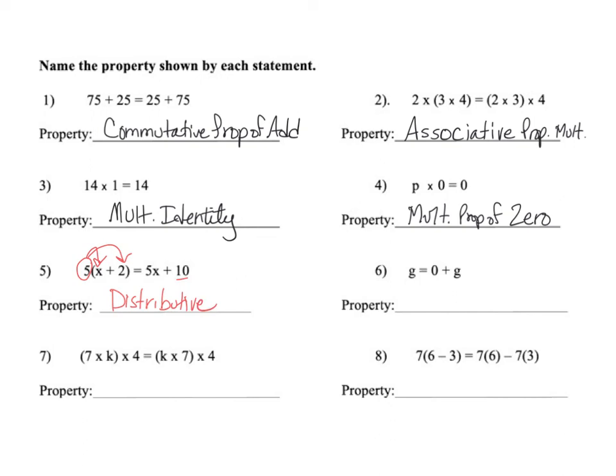Number 6, we have G and G stayed G over on the right. It was added to 0. So it was added to 0. It got to keep its identity. Therefore, we call that the additive identity.